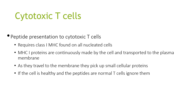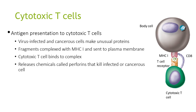Cytotoxic T cells require peptide presentation via MHC class 1, found on all nucleated cells. MHC class 1 proteins are continuously made by the cell and transported to the plasma membrane, picking up small cellular peptides along the way. If the cell is healthy and the peptides are normal, T cells are not activated. However, virus-infected and cancer cells make unusual proteins — fragments complexed with MHC class 1 are sent to the plasma membrane. The cytotoxic T cell binds to this complex and releases chemicals called perforins which kill the infected or cancer cells.